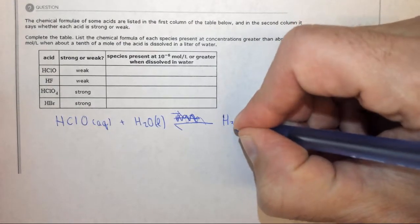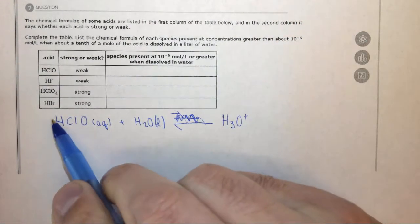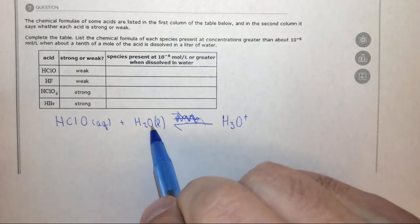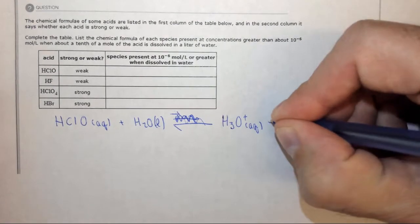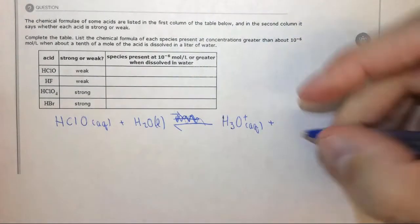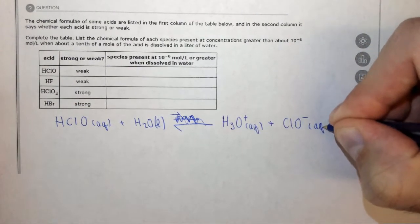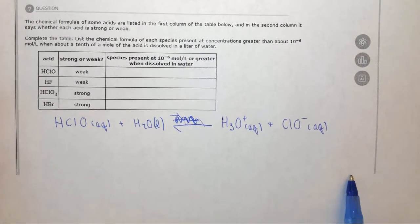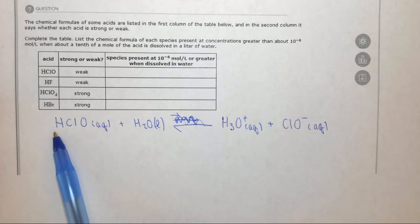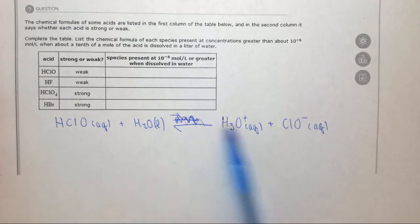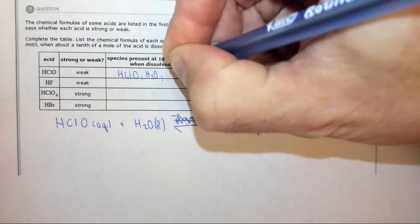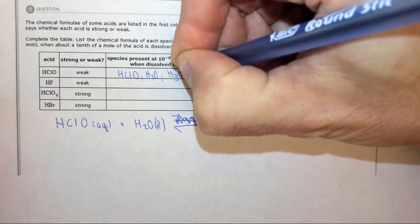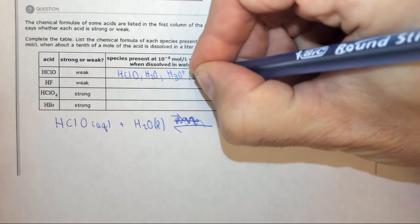And what you're going to end up with today is H3O plus, so hypochlorous acid acts as an acid and it donates a proton to water, which acts as a base and accepts a proton. We end up with H3O plus aqueous, plus what's left, ClO minus aqueous. And we're asked what of these species are in solution. Well in this case, since this is a weak acid, all four of these things are in solution. So HClO, H2O, H3O plus, and ClO minus.